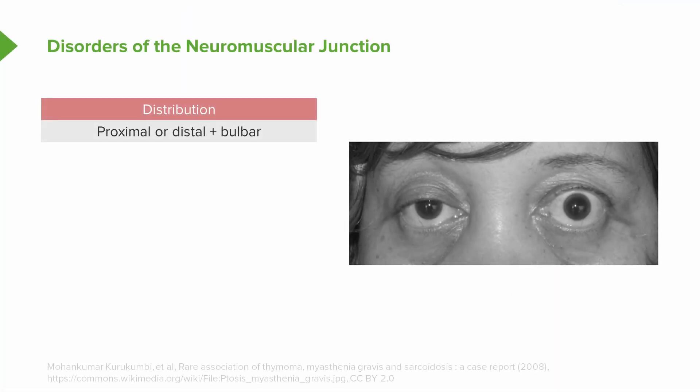For neuromuscular junction diseases, there's a characteristic distribution. Patients can have proximal weakness or distal weakness, but the key finding, the key distribution is we see bulbar symptoms. Patients have ptosis, diplopia, dysarthria, dysphagia, or some combination of those. And you'll see this patient with right-sided ptosis. The presence of bulbar findings is critical for localizing a problem to the neuromuscular junction and, in particular, differentiating from muscle disease.